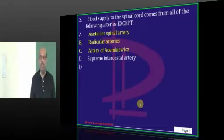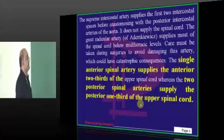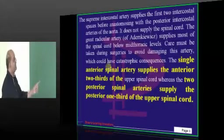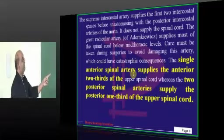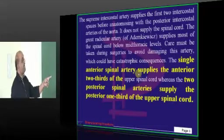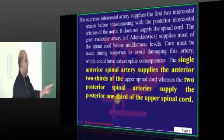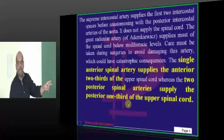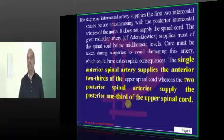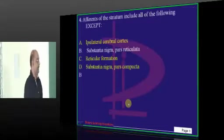Coming to the blood supply to the spinal cord: there is one single anterior spinal artery which supplies the anterior two-thirds, and two posterior spinal arteries which supply the posterior one-third — that is what you have to fundamentally remember.